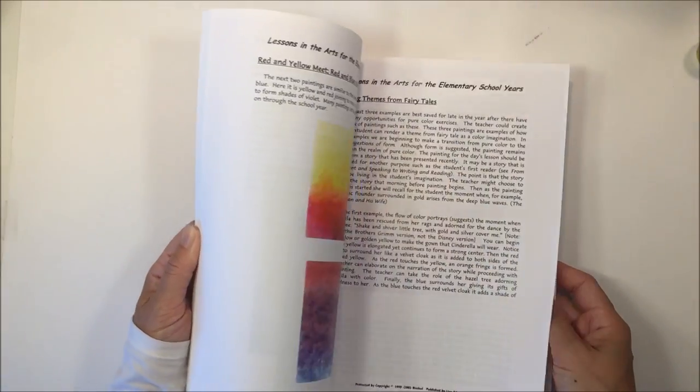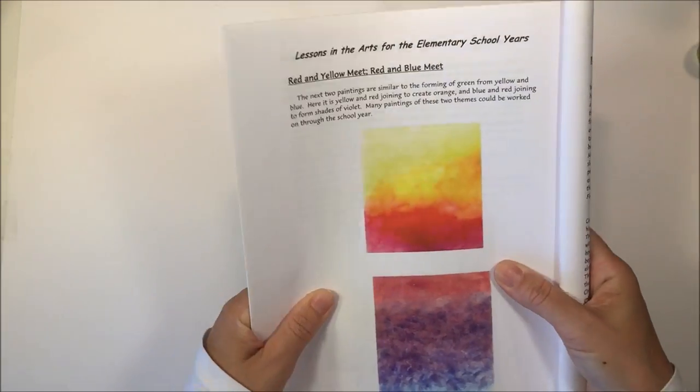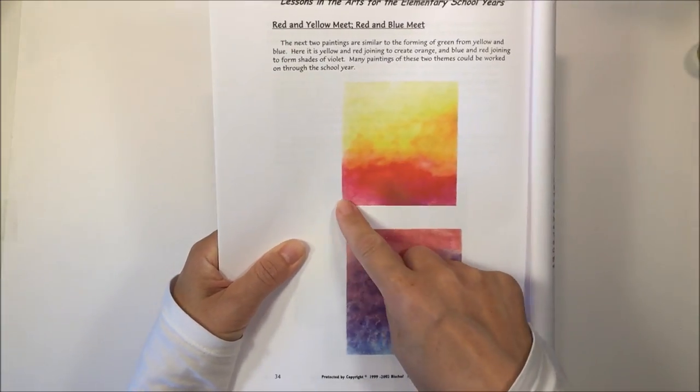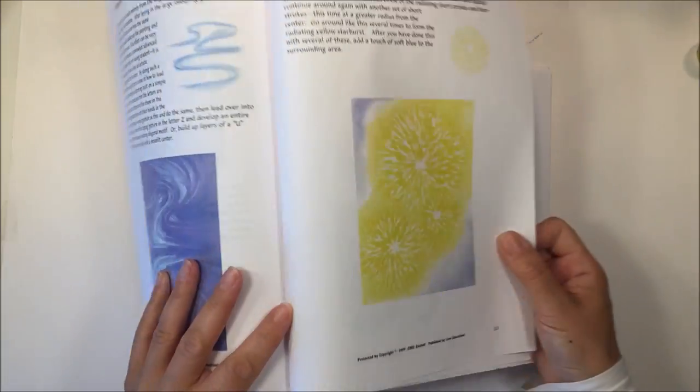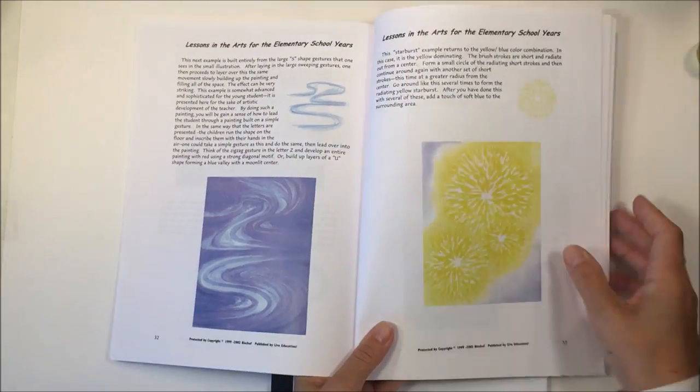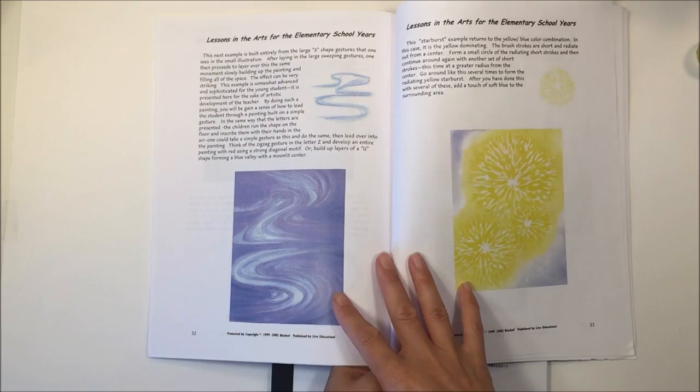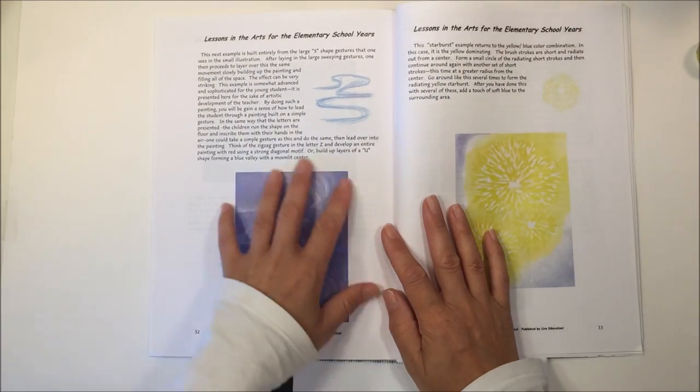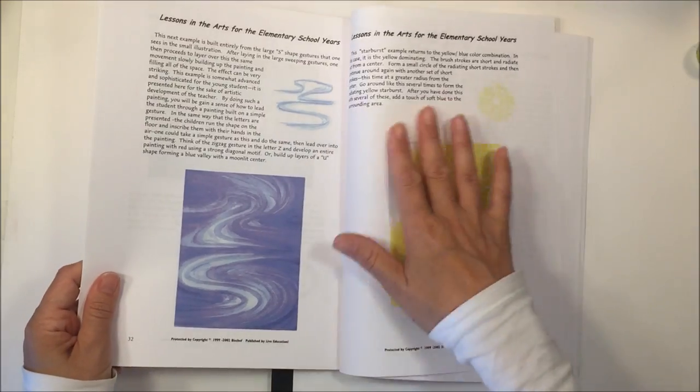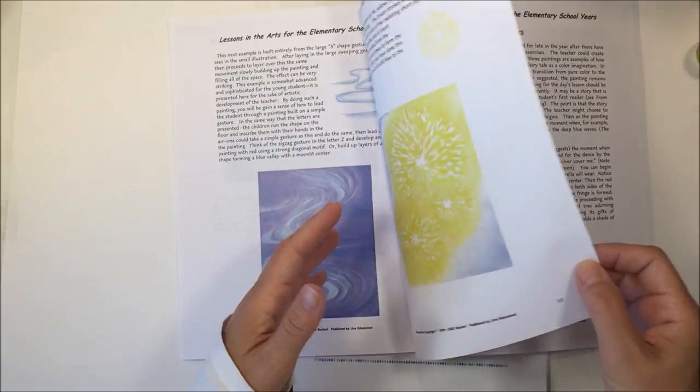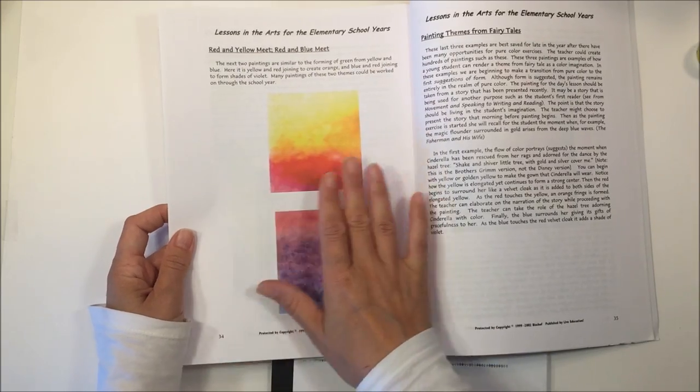For the very first lessons that the child will do, in first grade especially, is the mixing of just two primary colors. The very first lesson is just yellow or just blue. These two first watercolors go great with a story about the sky or a story about the sun. Then maybe as the sun sets and you add a little bit of the red, you get like a beautiful sunset.